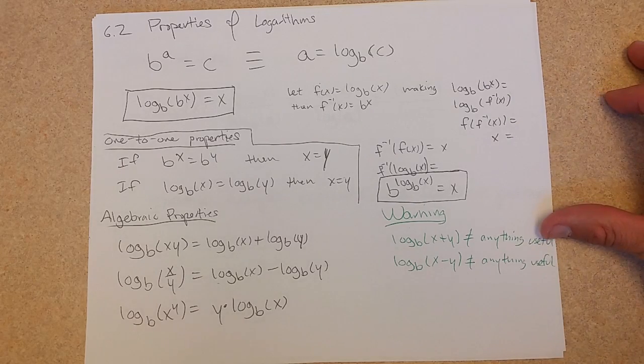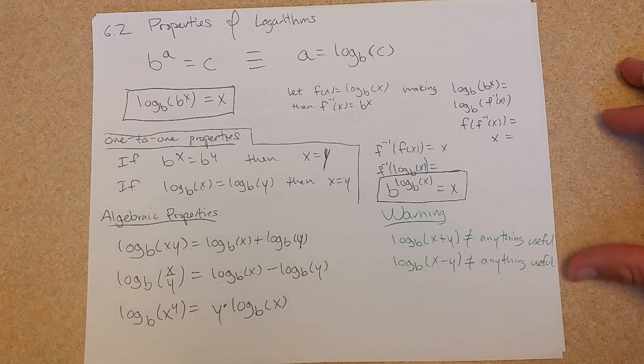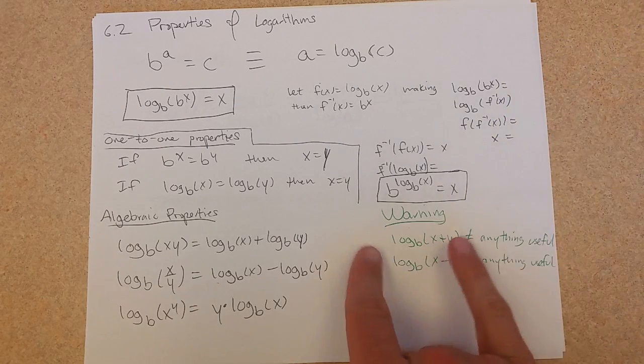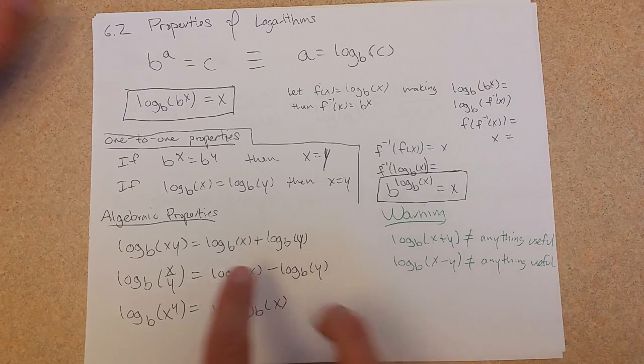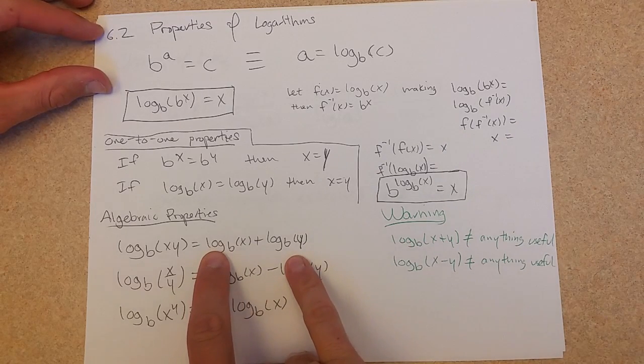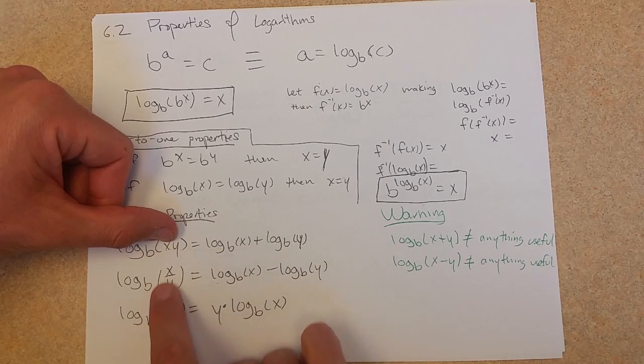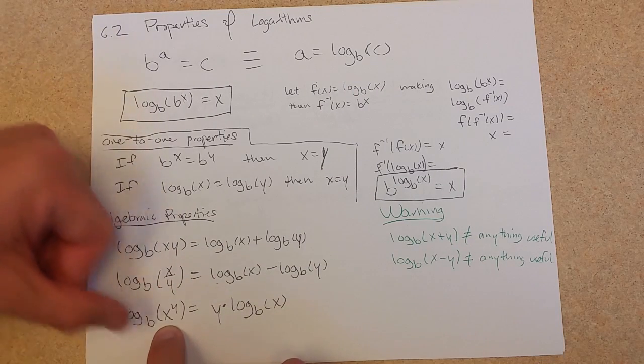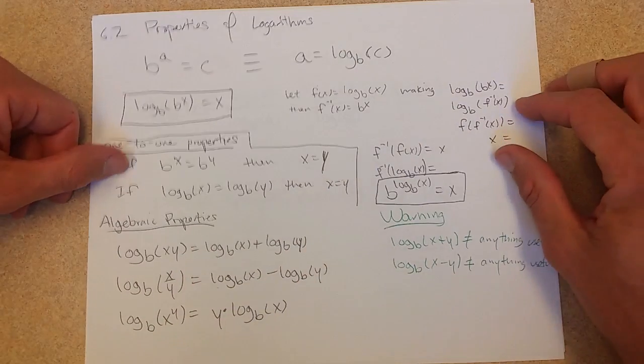And some common mistakes I've seen. If you add inside a log or subtract, you can't really do anything useful with that. So just be careful. There is a log property that deals with addition, but it is addition outside of the log. It means multiplication inside. Just be careful. You have to multiply, divide, or have powers inside of a log. Outside, you're adding, subtracting, or you have a coefficient.